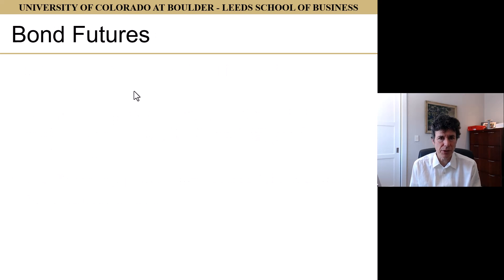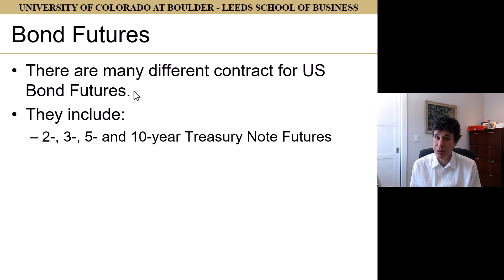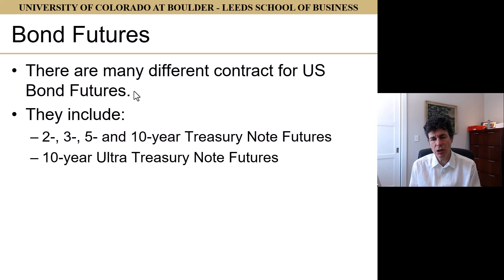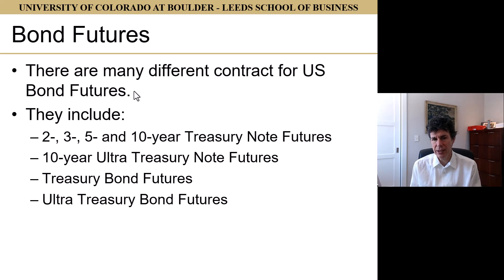The bond futures reflect this, and there are many different contracts for U.S. bond futures. They include 2, 3, 5, and 10-year Treasury note futures, 10-year ultra-treasury note futures, Treasury bond futures, and ultra-treasury bond futures. The 2- and 3-year note futures are on $200,000 of principal, and everything else is on $100,000 of principal.